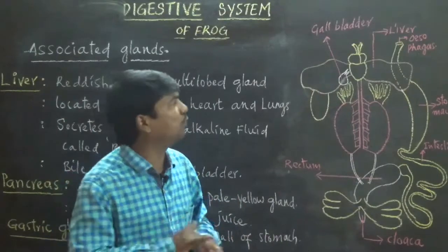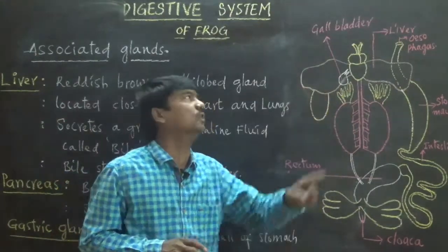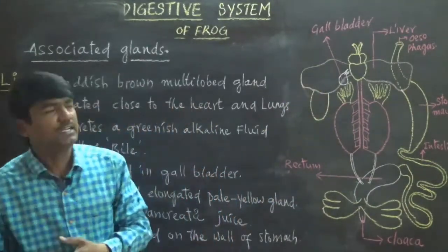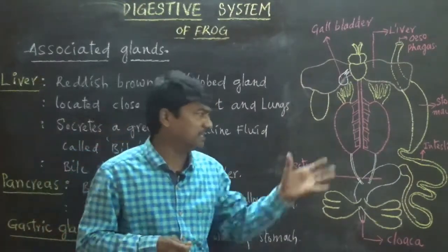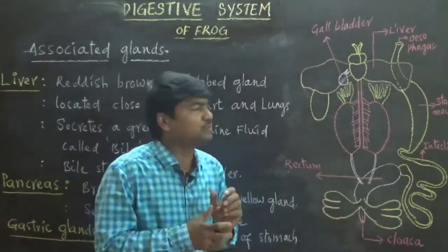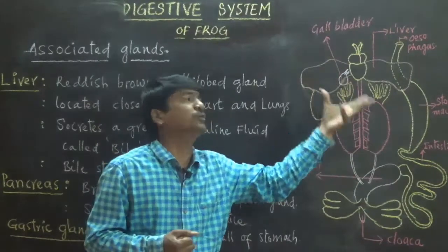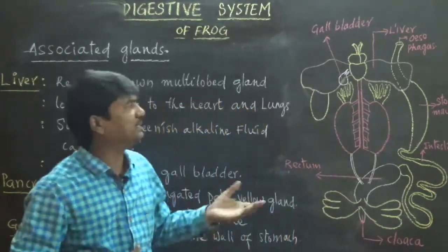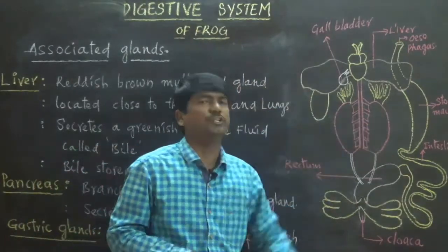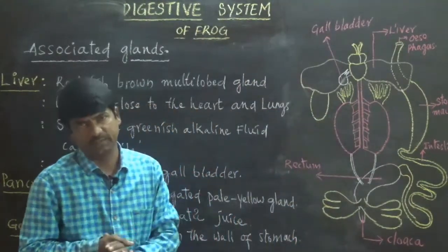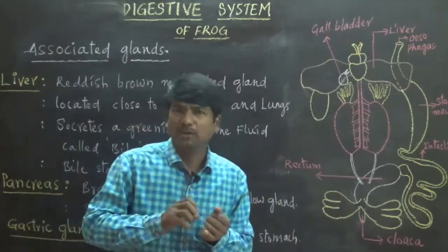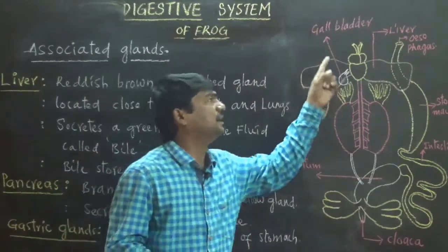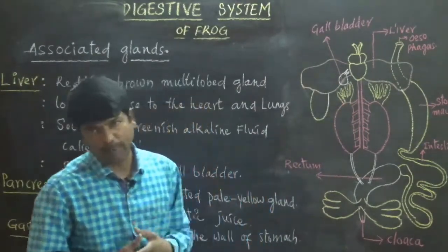Bile is stored in a small sac-like structure called the gallbladder. Whenever it is required for the digestion of food molecules, bile is released into the duodenum through a bile duct. So the liver produces bile juice, which is stored inside the gallbladder.